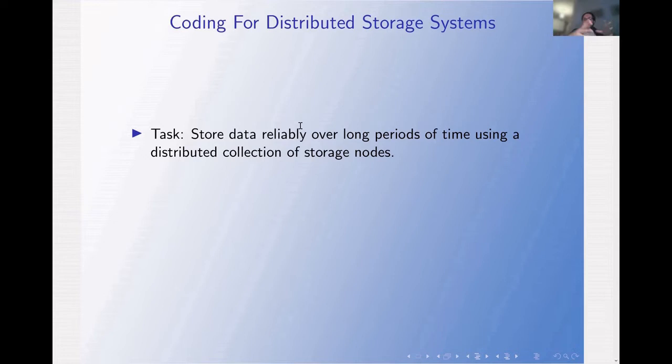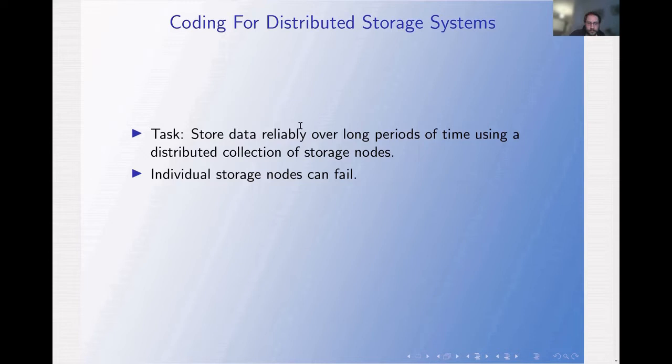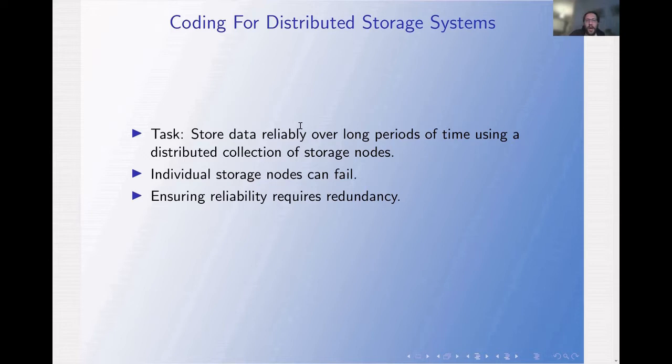The task of a Distributed Storage System, which is just a collection of many nodes, is to store data reliably over long periods of time using this distributed collection of storage nodes. The problem is that individual storage nodes can fail — meaning the data stored on those servers is erased. Since the data was erased, we want to recover it, and recovering erased data requires redundancy. So the solution is basically to use an erasure correcting code.